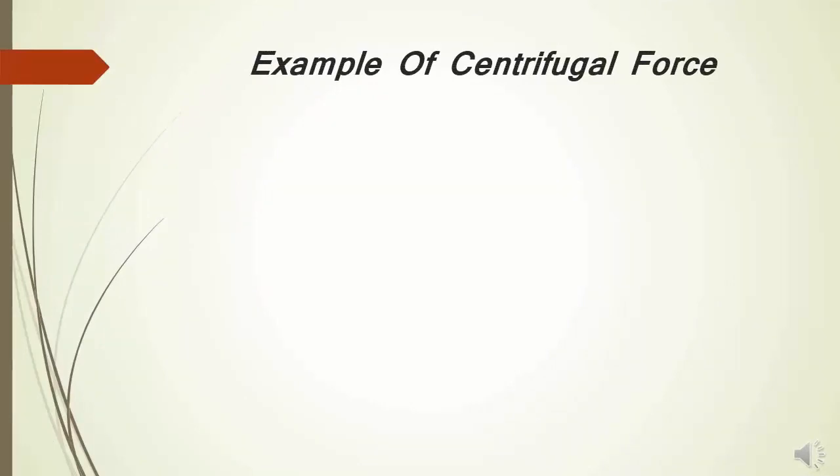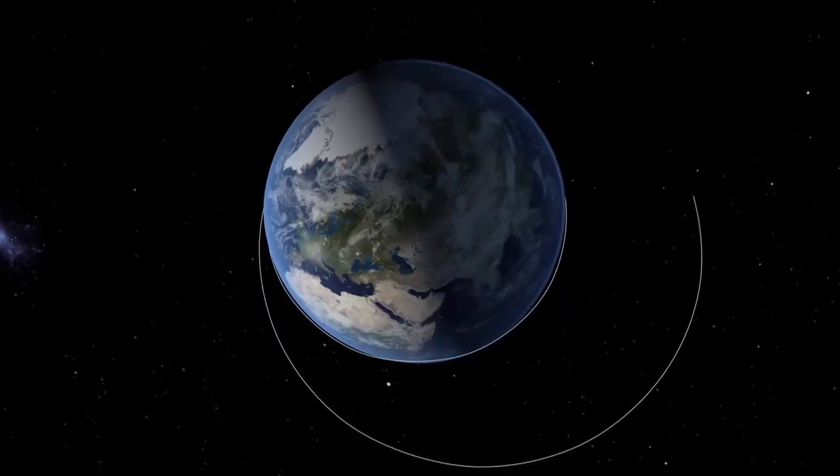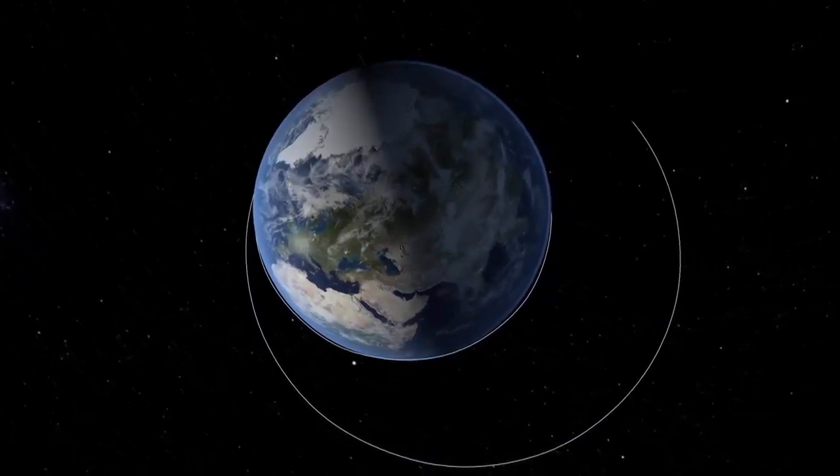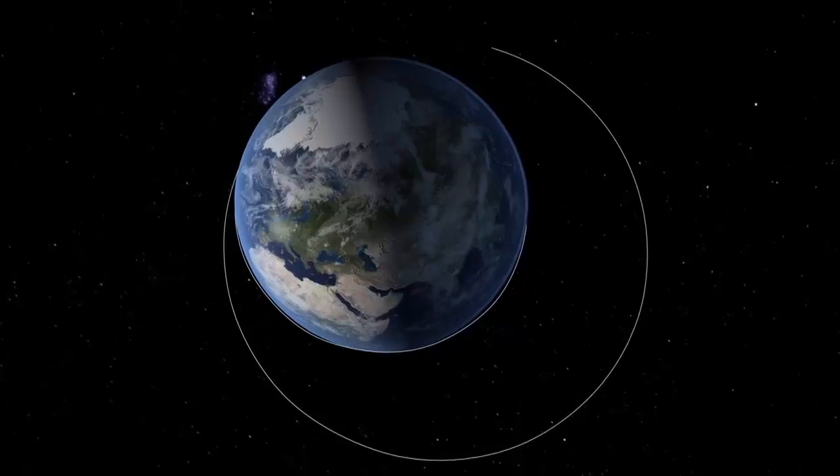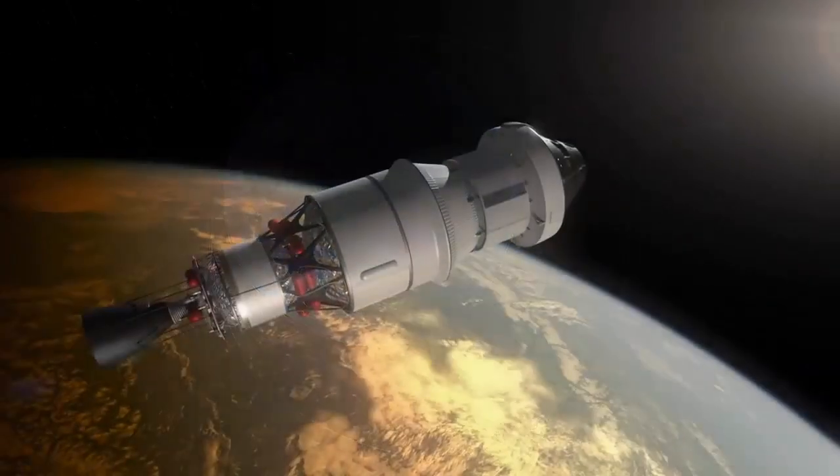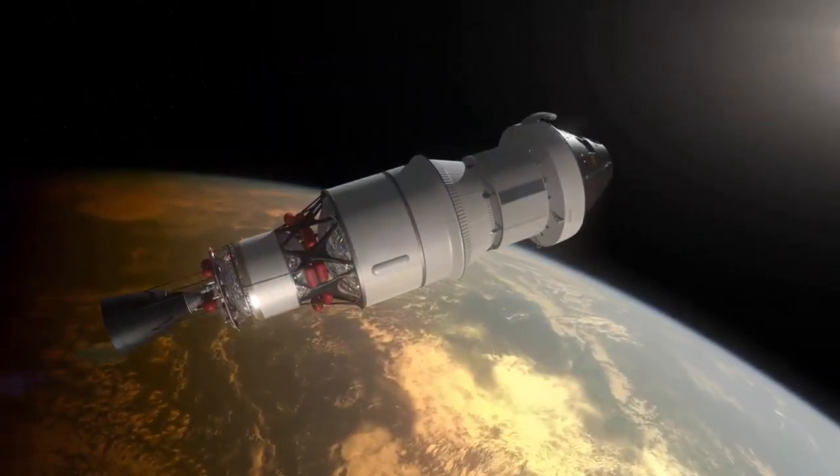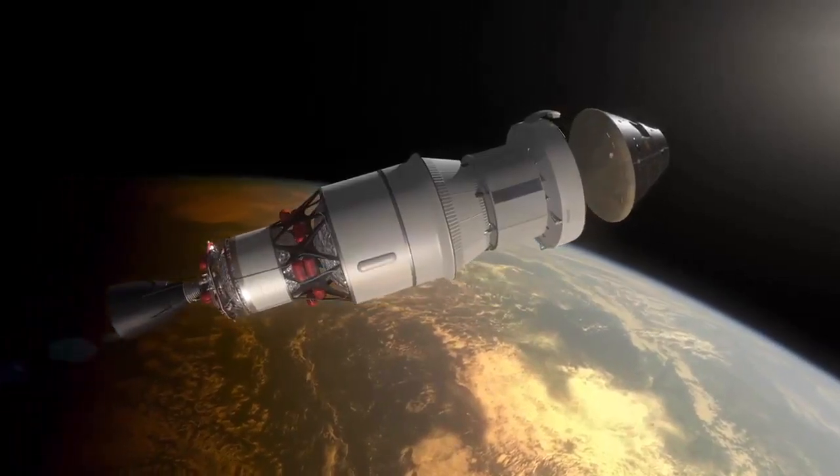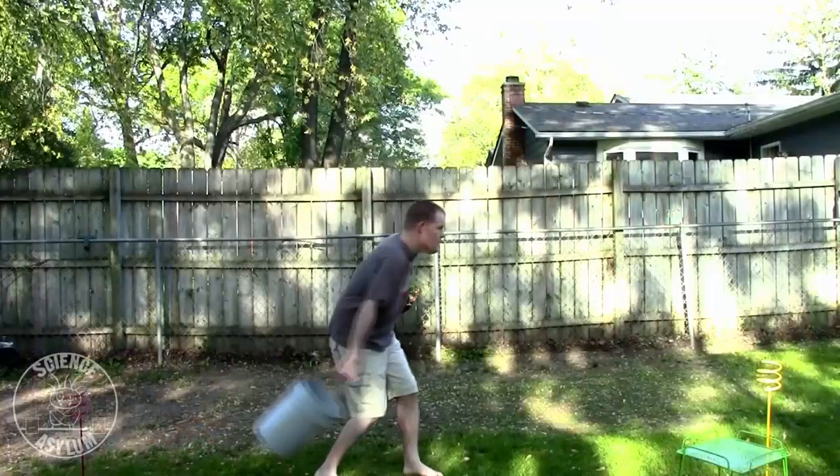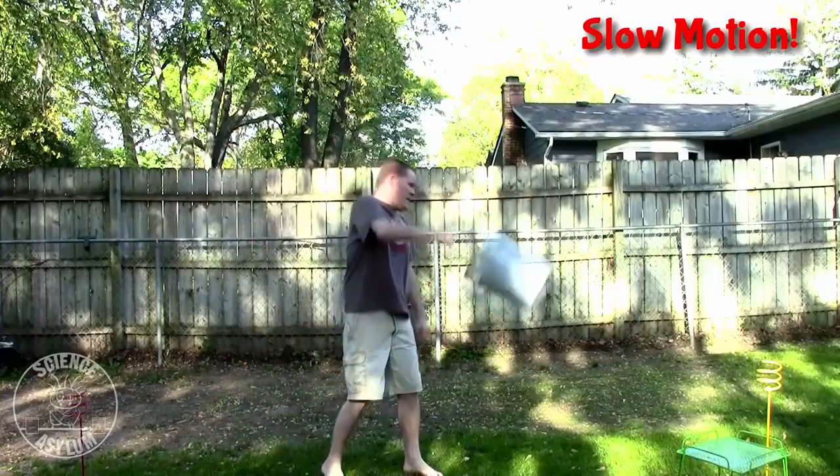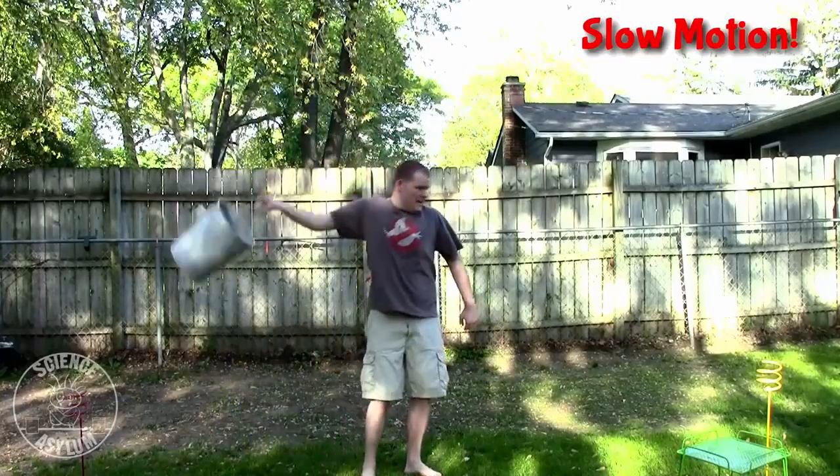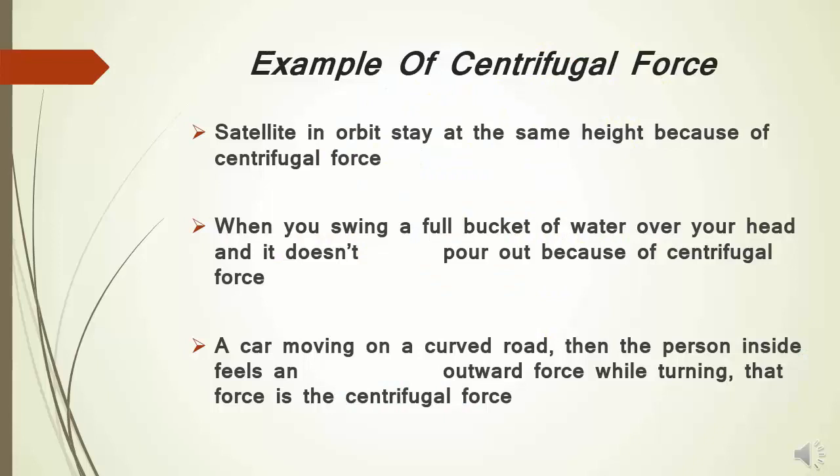Let us see some example of centrifugal force. For a satellite which is orbiting around the earth and it maintains the same height, that is because of centrifugal force. Another one, when we swing a bucket full of water over our head, the water doesn't fall down. This is because of centrifugal force acting on the water.